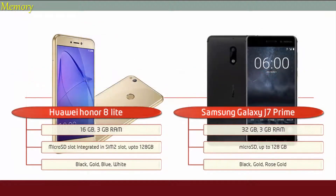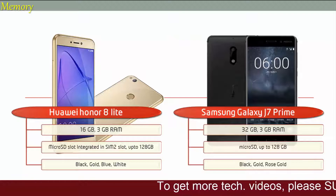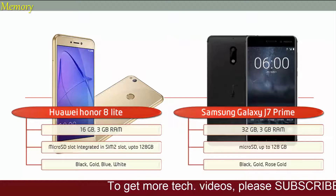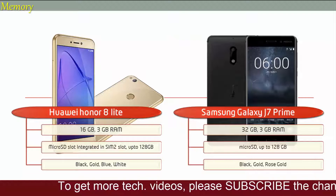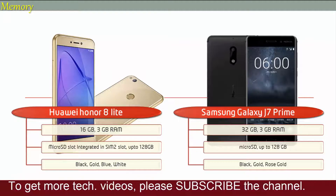Talking about the memory, the Honor 8 Lite comes with 16GB of internal storage and 3GB RAM. It supports microSD up to 128GB, integrated in the SIM 2 slot. Huawei has produced this device in black, gold, blue and white colors.